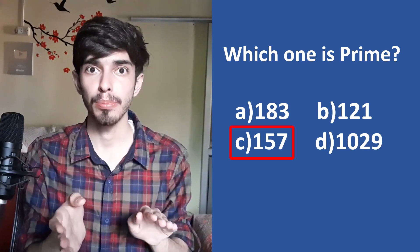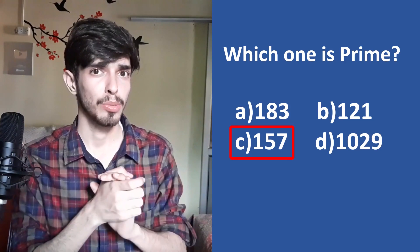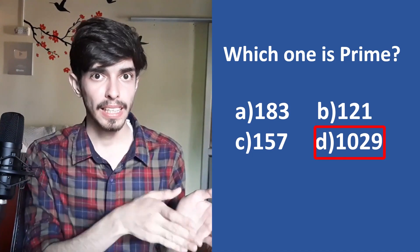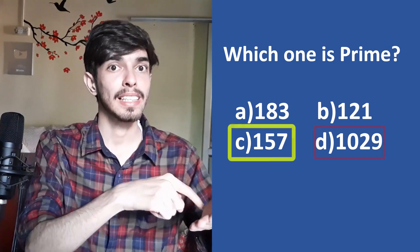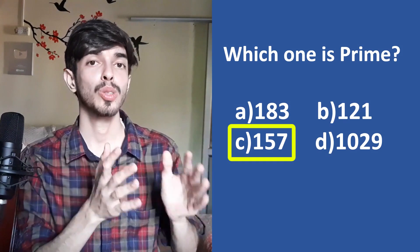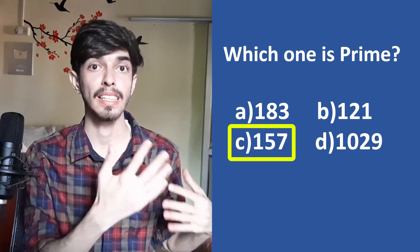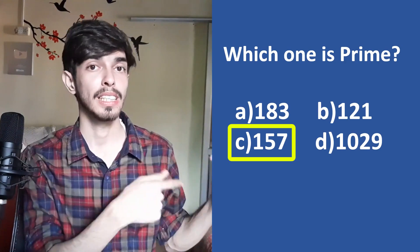Before checking 157 for 7 and 13, let's quickly check the last option, 1029: 1+0+2+9=12, divisible by 3 — so 1029 is not prime. The only option remaining is 157, which must be the prime number. We didn't need to check 157 for 7 and 13, saving valuable time. This elimination approach is exactly how you should tackle these questions. Thanks for watching, and always remember that math is everything!